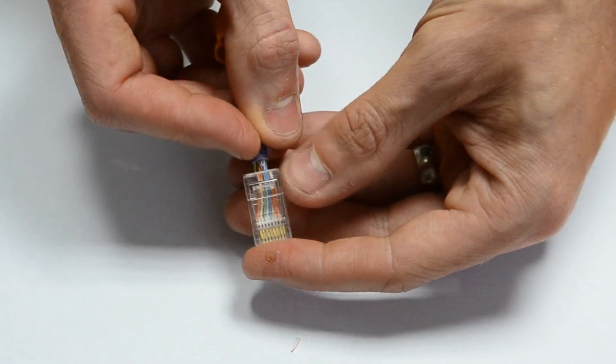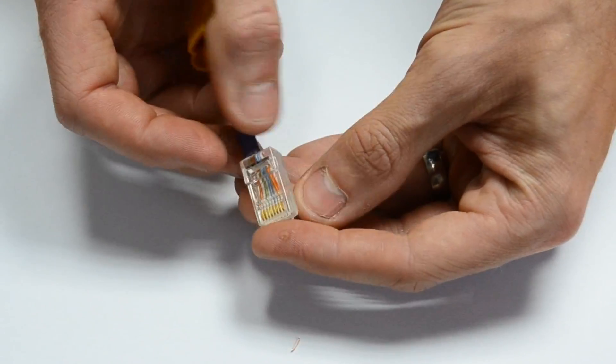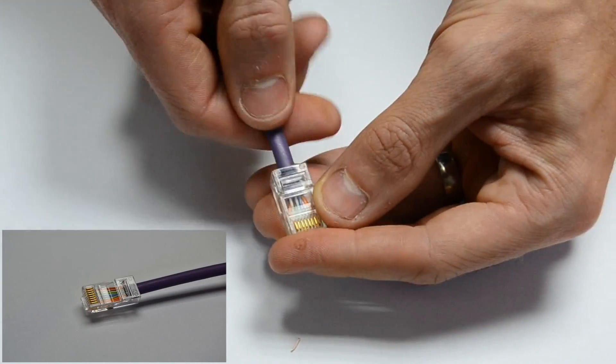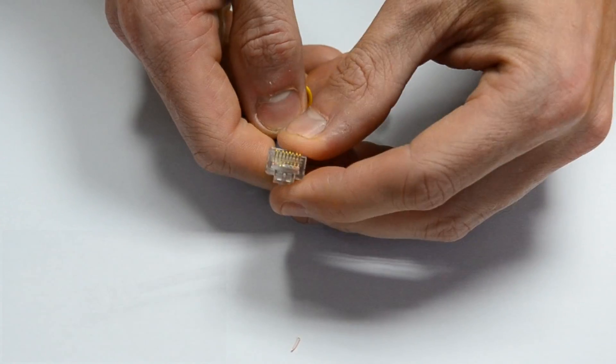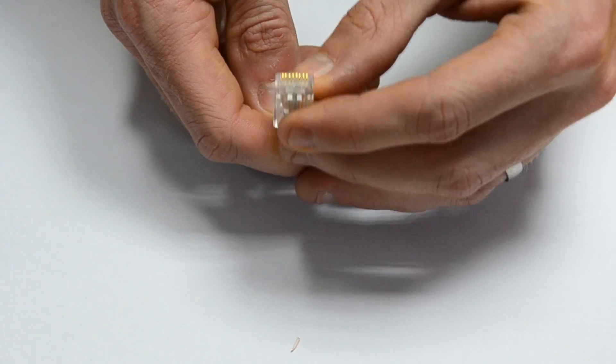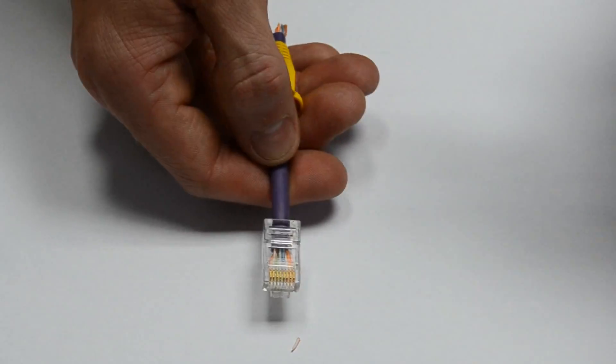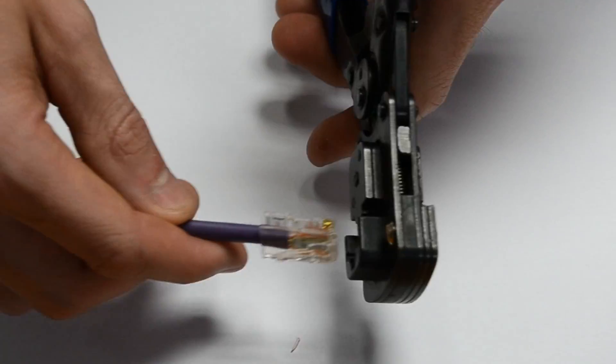Now with the center pin down and the gold pins facing up, we now place the cable into the RJ45 connections with the orange and white cable on the far left hand side and the solid brown cable on the right hand side. Once you've pushed the cables in you just want to make sure you've pushed them all the way to the end to make sure that the gold pin can actually clamp down on them.